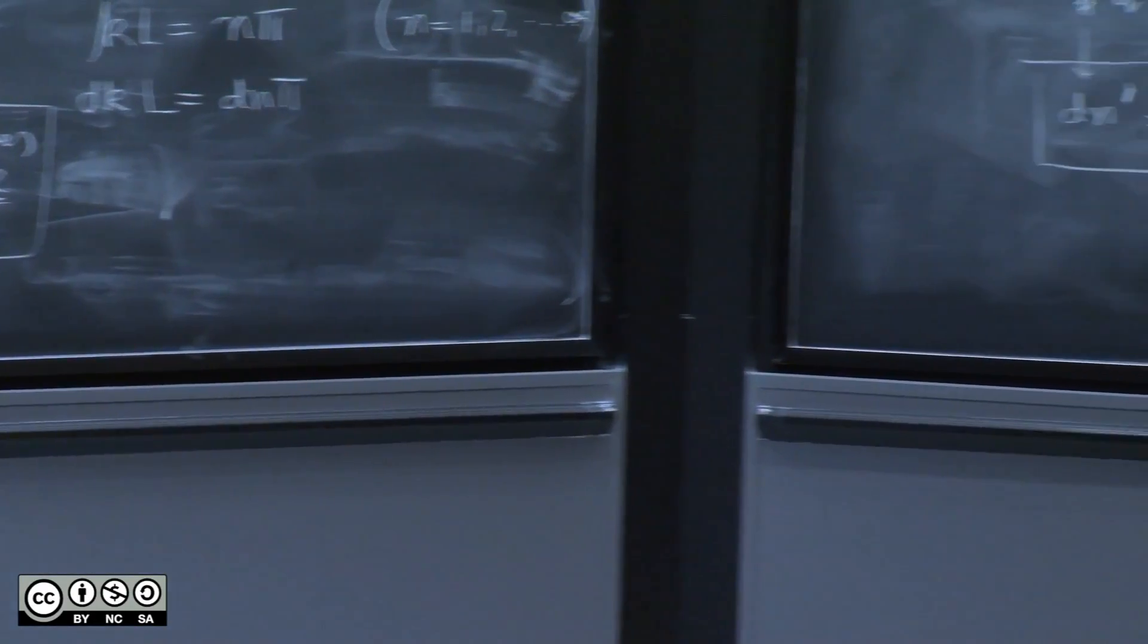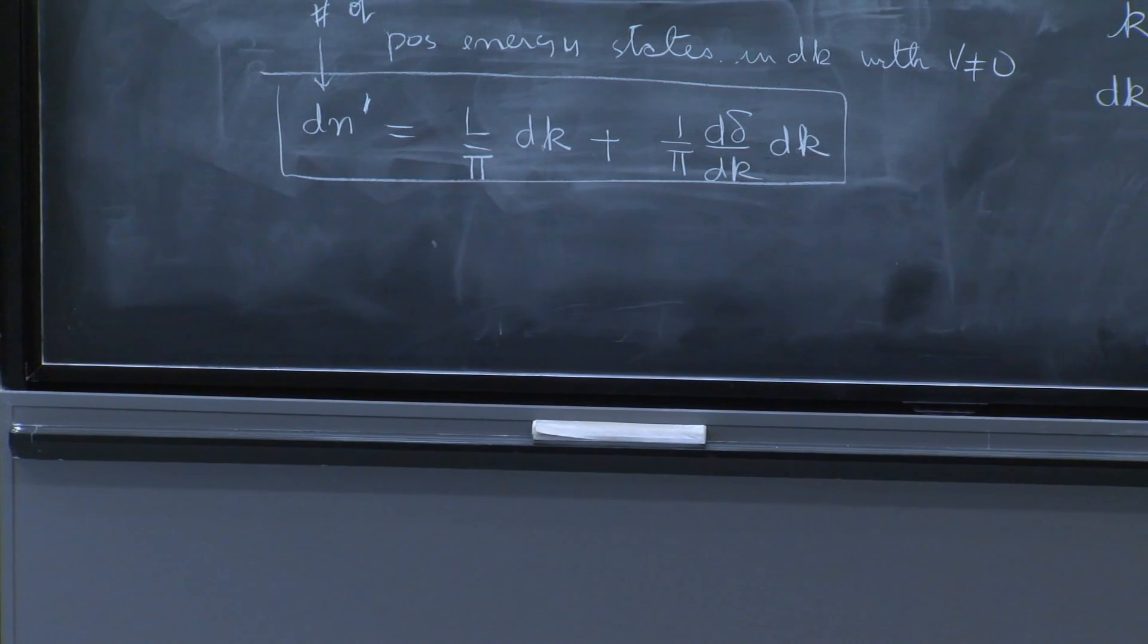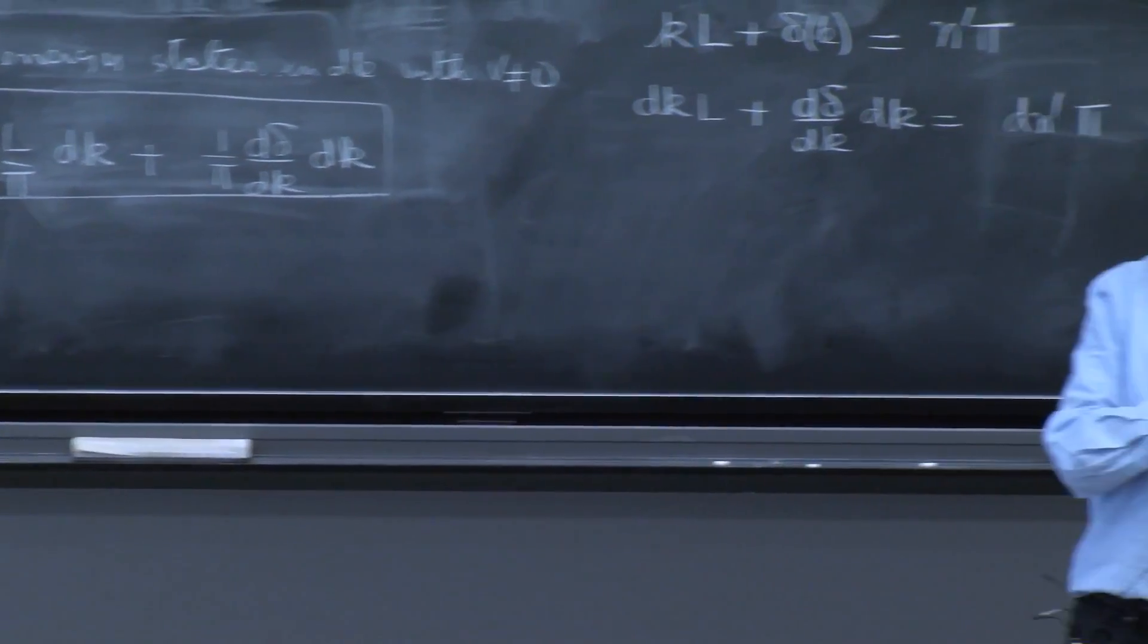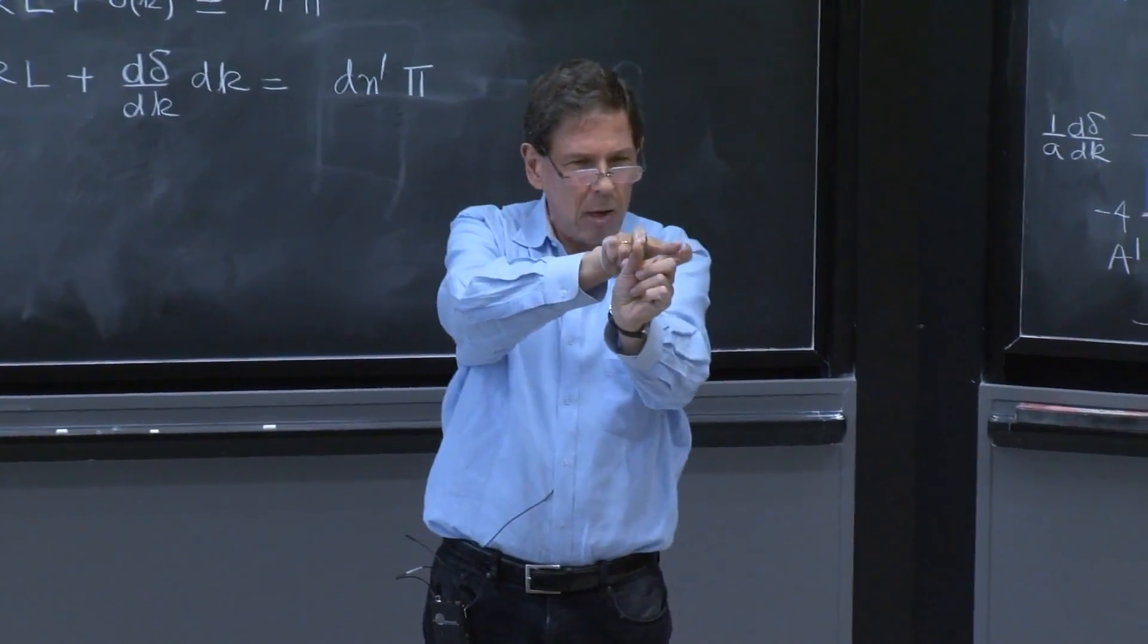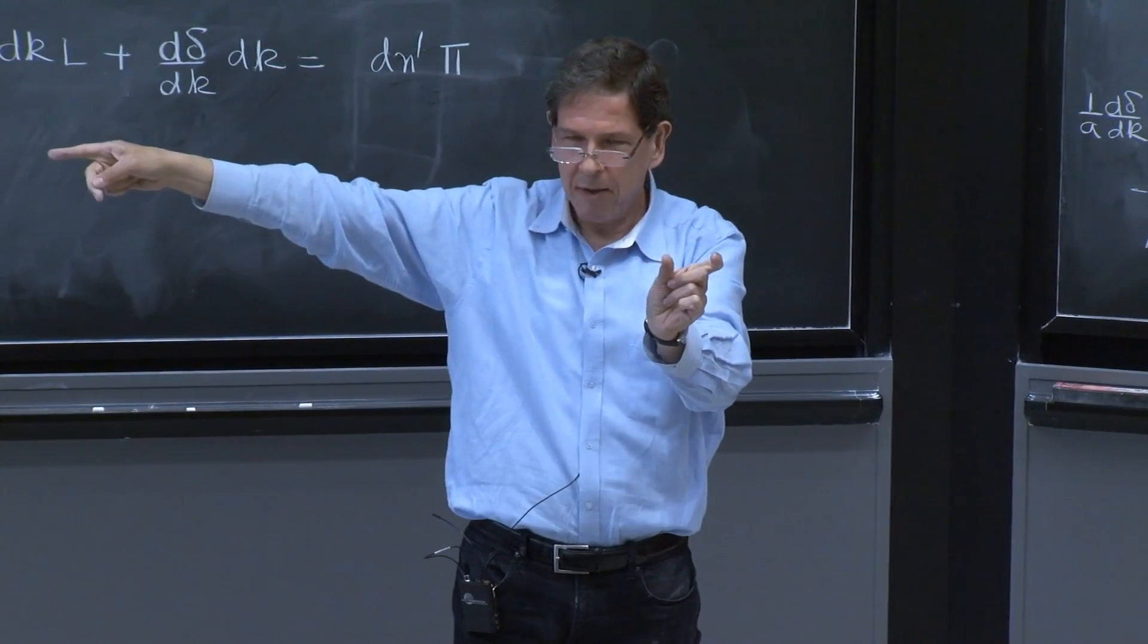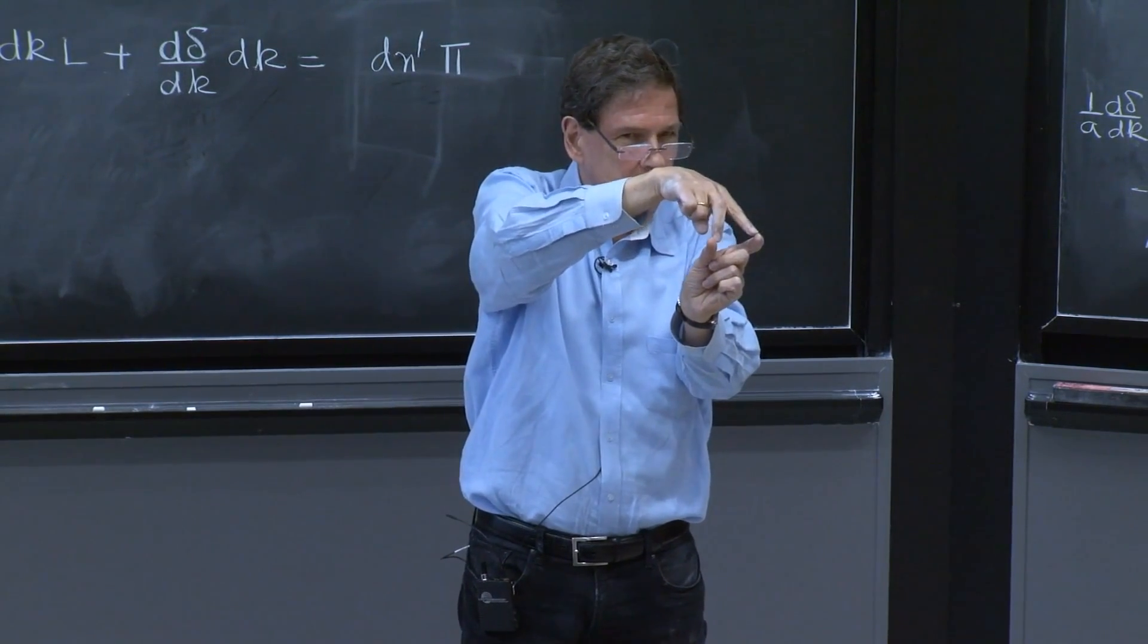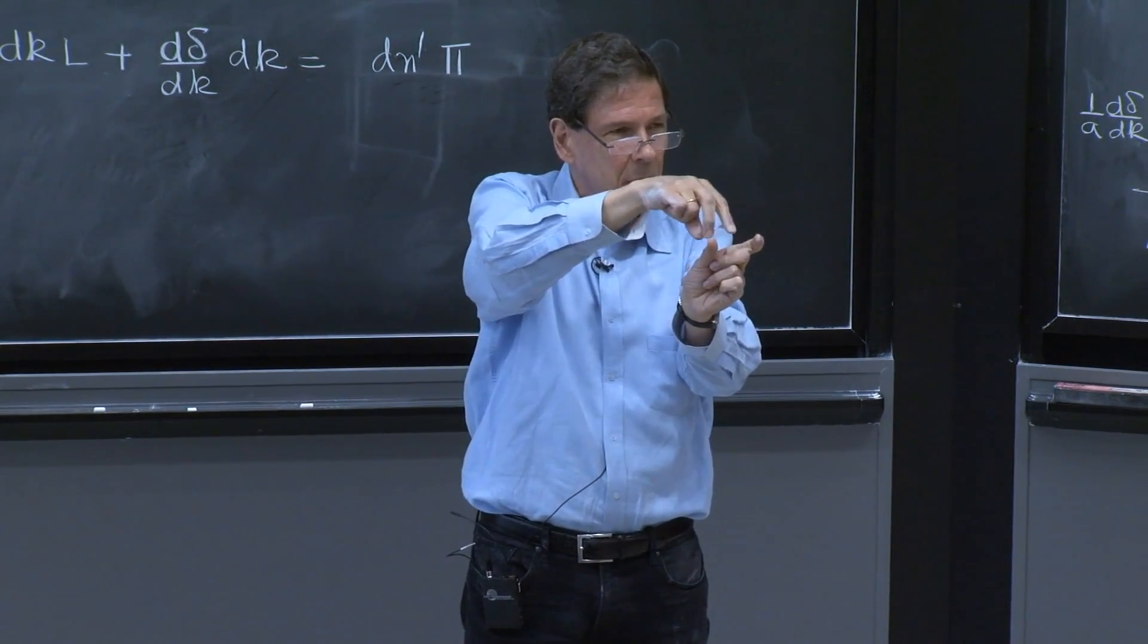We have two equations now relating this number of states. So I look at the k line and I look at the little piece dk and say, how many states were there with zero potential? Some number, first blackboard. How many states are there now with some potential? Some other number.